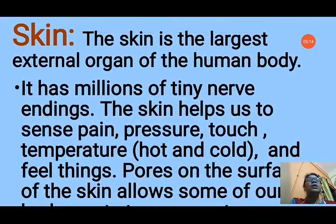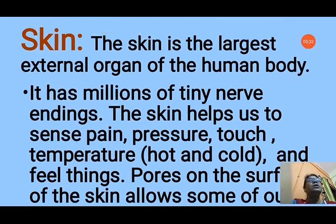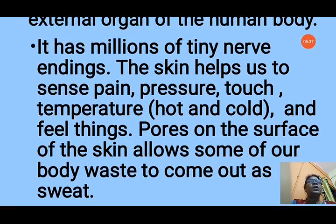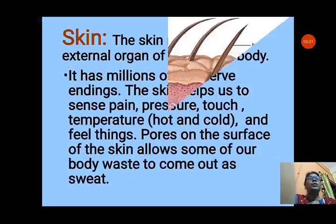The skin is the largest external organ of the human body. It has millions of tiny nerve endings. The skin helps us to sense pain, pressure, touch, temperature, hot and cold, and feel things. It covers all over our body. The pores on the surface of the skin allow some of our body waste to come out as sweat, and some waste products also come out from our body through sweat.